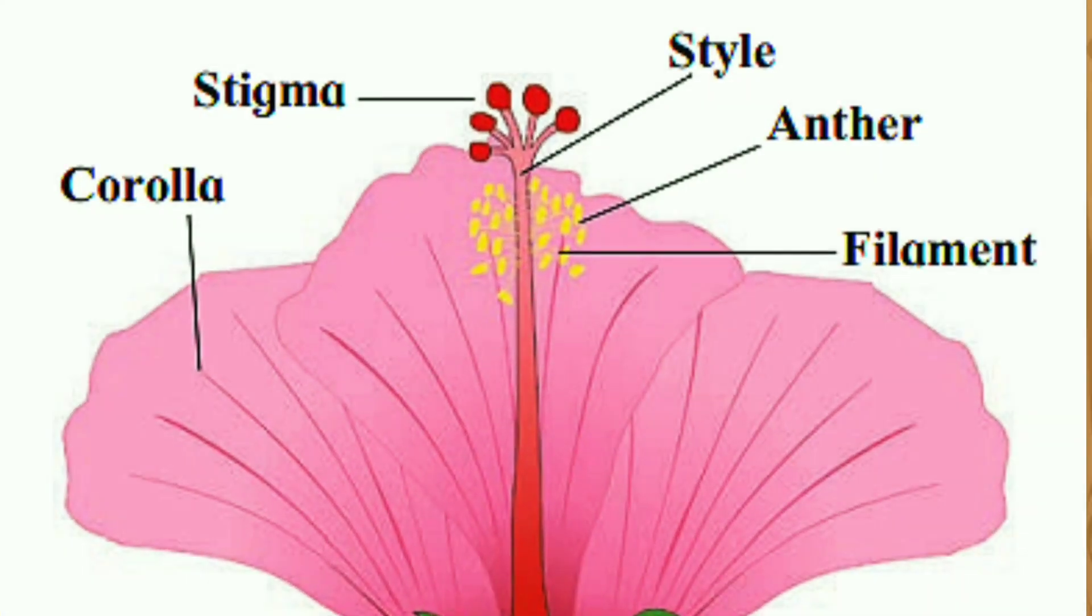Let us see about the androecium. This is the male reproductive part of the flower. It consists of stamens. Each stamen is made up of anther and filament.